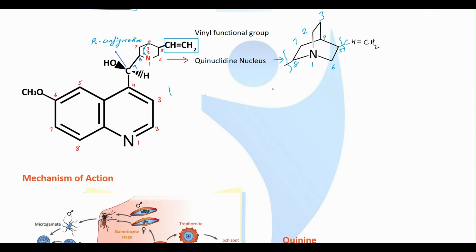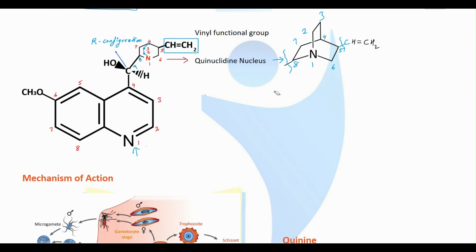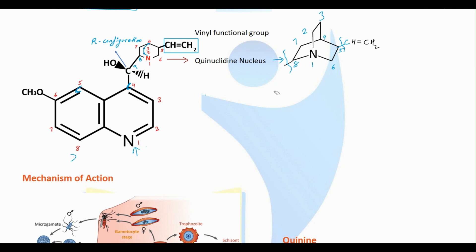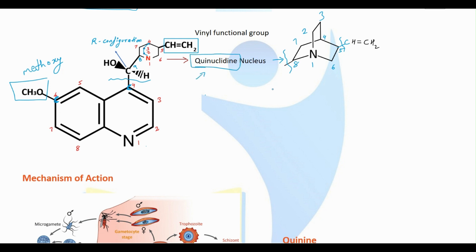Now let's see the structure of quinine. The basic nucleus of quinine is the quinoline nucleus. The numbering starts from the nitrogen heteroatom and goes such that we have the C4 carbon. Two positions have substitutions: one is at C4 and the second is at C6. At C6 you will find a methoxy substitution, and at the C4 position we have a special nucleus typical for quinine.